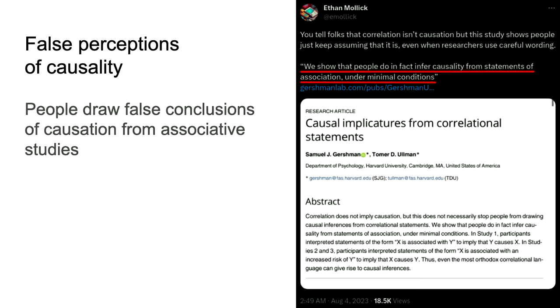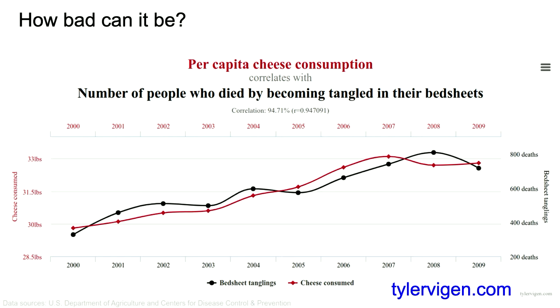It's not just researchers hedging their bets about whether research covers causality. There's also been research into the perceptions people draw from associative studies — if they read that there's an association between X and Y, people often draw the conclusion that X causes Y, which may or may not be true. There are a huge number of examples showing that it very easily can be a spurious or false correlation. In fact, Tyler Vigen has a whole website full of hilarious correlations that don't have any real causal relation, just to show how easy it is to discover a false relationship.